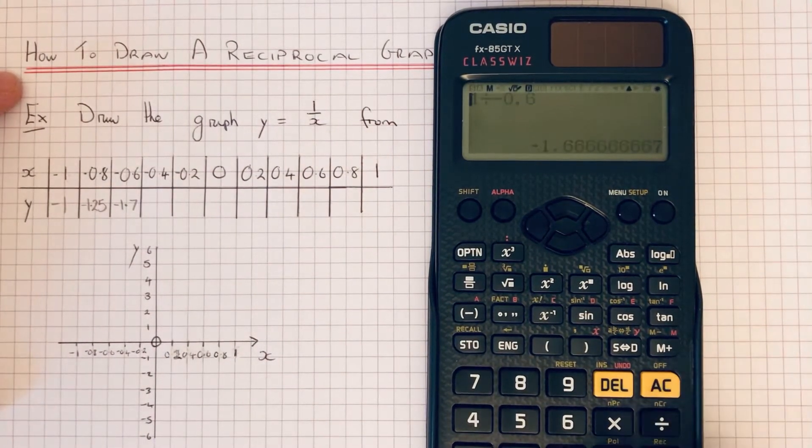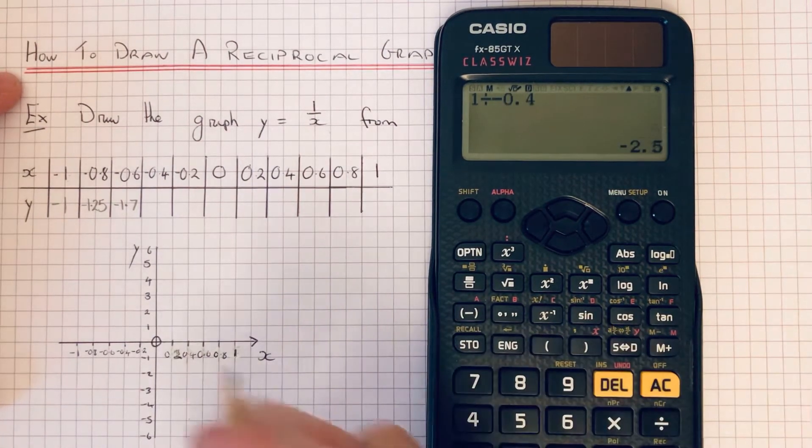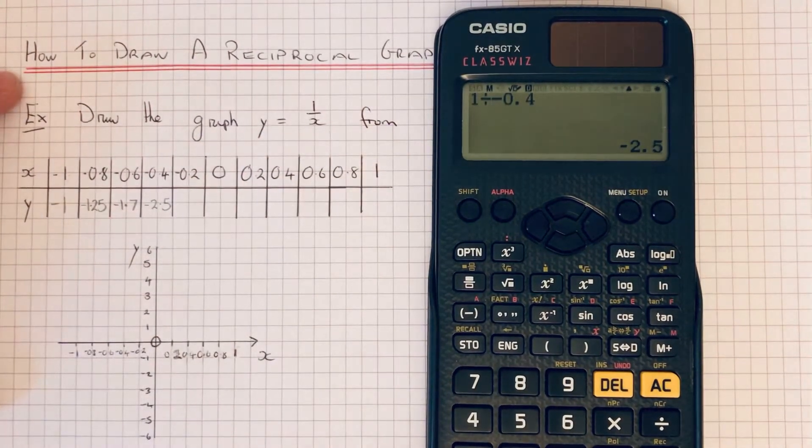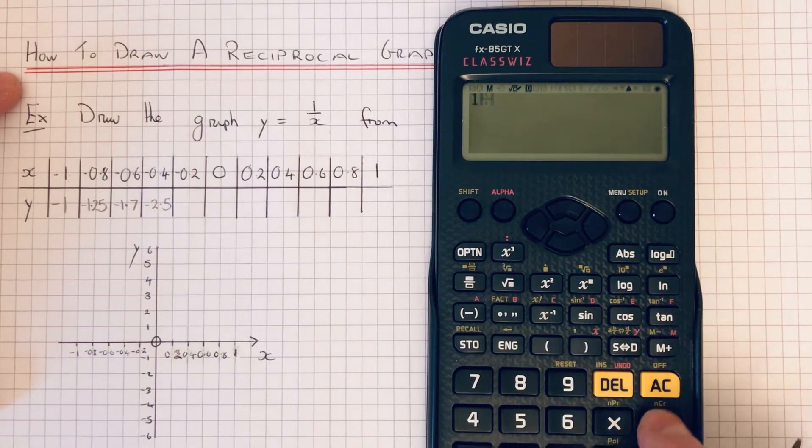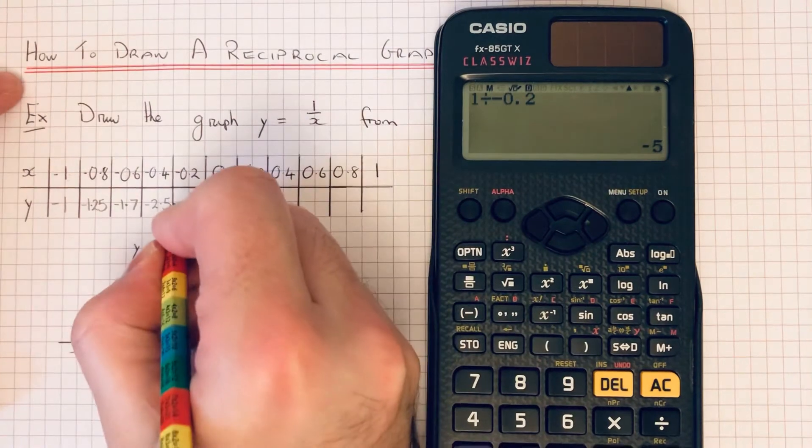Then we've got x is minus 0.4, so we do 1 divided by minus 0.4, which is minus 2.5. Then we've got x is minus 0.2, so 1 divided by minus 0.2 is minus 5.